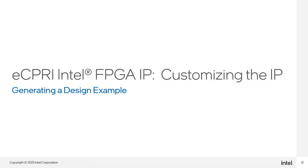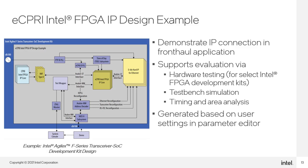Now we'll look at how to create a design example. The ECPRE Intel FPGA IP parameter editor can create a complete design example for you. The design example is created using the very parameters that you set in the editor window, and provides a great example of how the IP core can be connected in your own design. A block diagram of the design example created when targeting an Intel Agilex F-Series device is shown here. The design example is fully functioning — it comes with a test bench wrapper for simulation and the files necessary to target select Intel FPGA development kits. Using the compiled results, you can also get helpful resource usage and performance information on the IP core.